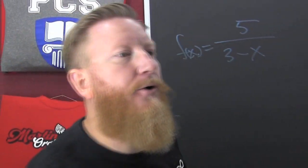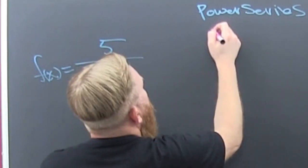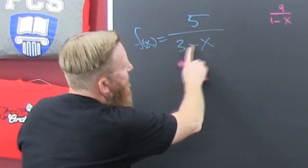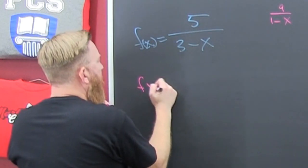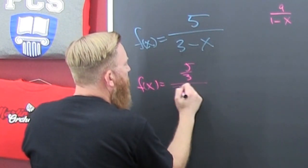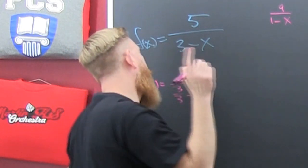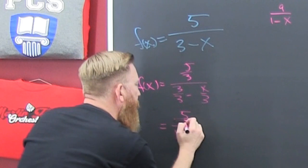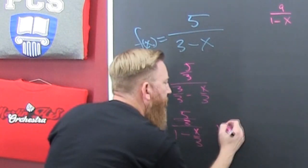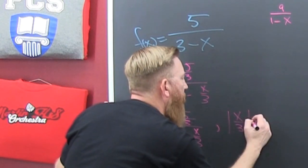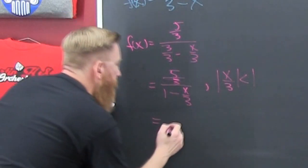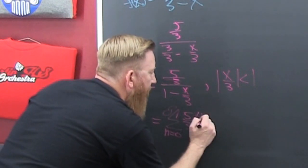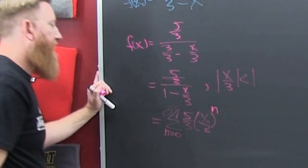We'll get to that example in a minute, but right now let's come right up in it. What are we trying to find? We're trying to find an A over one minus X. So we're trying to get that in that form. I see I have a three there — what does it need to be? It needs to be a one. So I'm going to divide everything by a three. So that's a five over three, a three over three, a minus X over three. So when we do that, that's a five thirds over a one minus X over three. We know that's going to converge when X over three is smaller than one. And then it's going to converge to the sum — starts at zero and goes forever — of five thirds times X over three to the N.